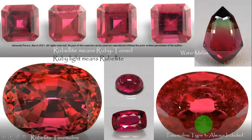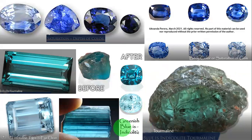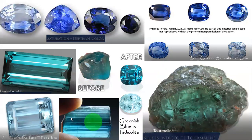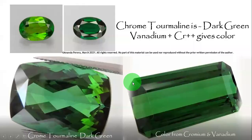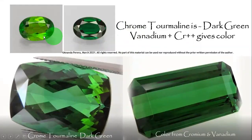We have Type 1. Greenish blue is indicoid. Indicolite is rough. We need chromium — there is a greenish blue indicolite light. Chrome tourmaline is dark green — its color comes from chromium and vanadium.